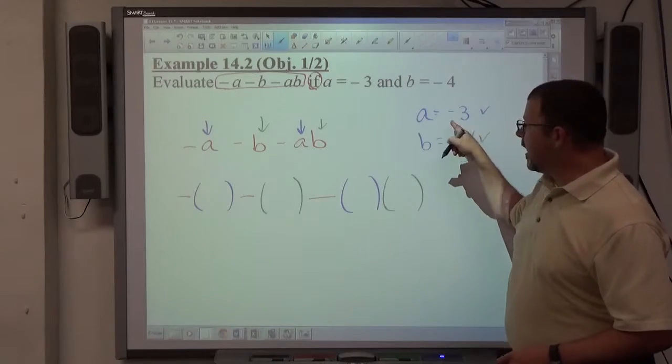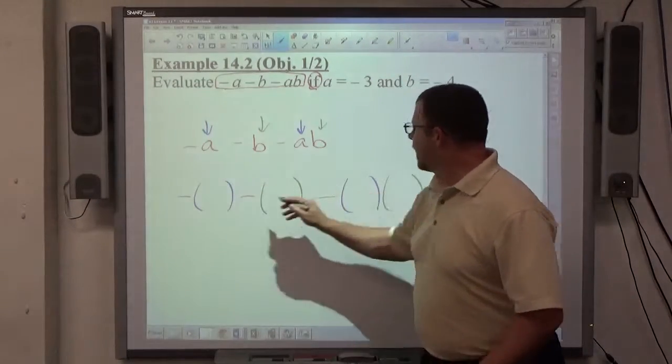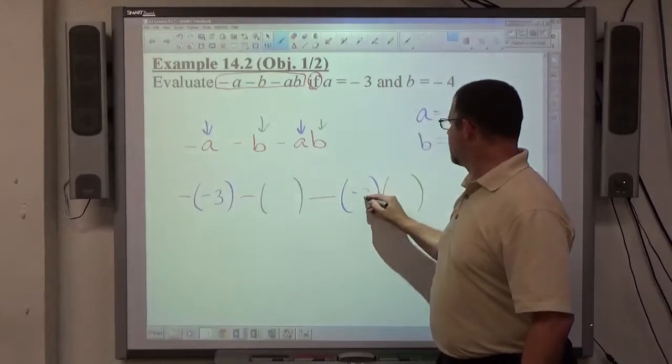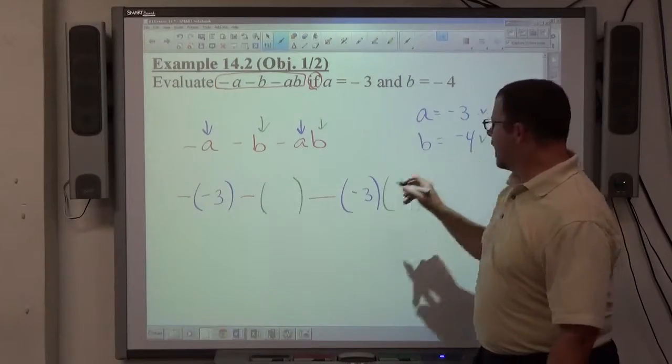So everywhere I see an a, which is this and this, I'm going to put a negative 3. And where I see a b, I'm going to put a negative 4.